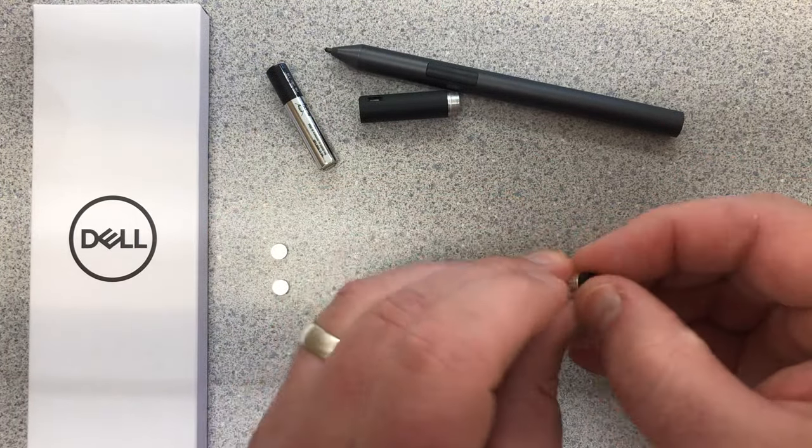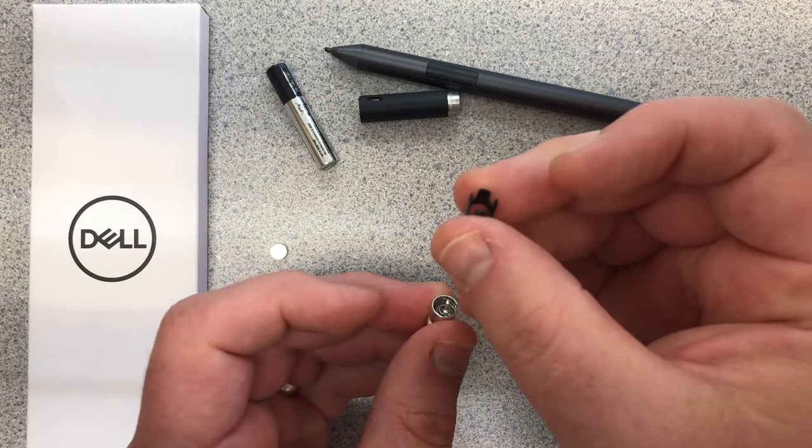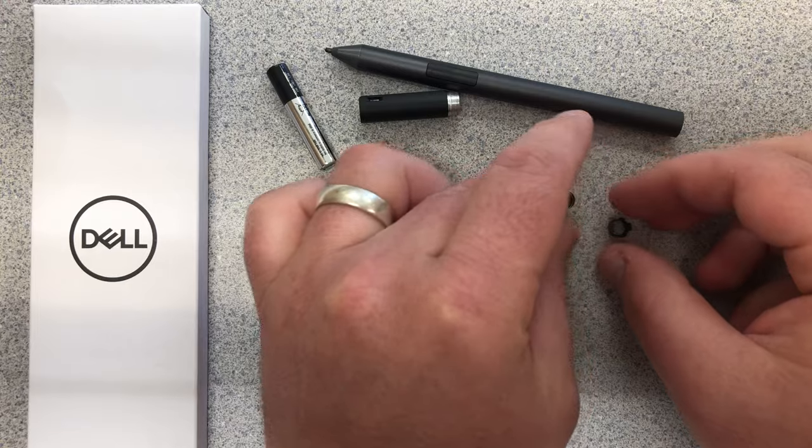What we're going to do is we're going to take this black piece out. It's got little nibs right there that are going to actually help us out a lot.